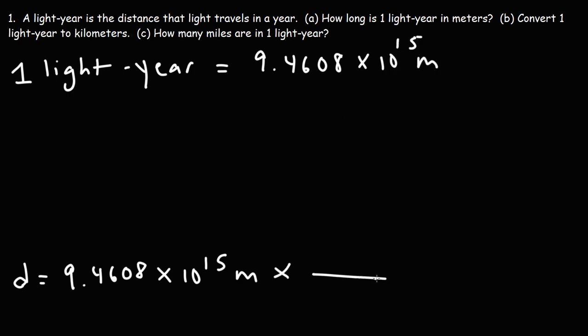Now let's convert this to kilometers to get the answer for part B. 1 kilometer is 1,000 meters. So we need to divide by 1,000. When you divide by 1,000, basically we're going to decrease this number by 3. So it's going to be 9.4608 times 10 to the 12 kilometers. Now 10 to the 3rd, that's a kilo. That represents 1,000.